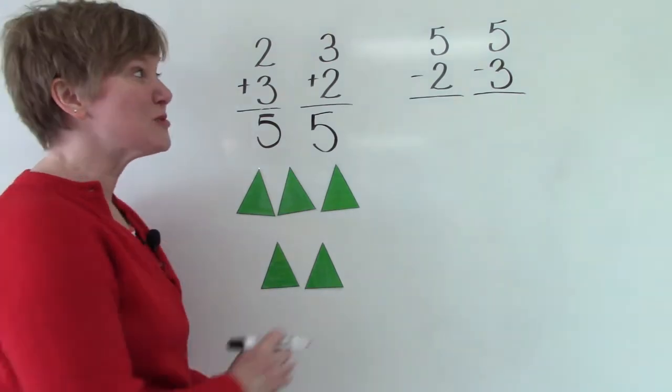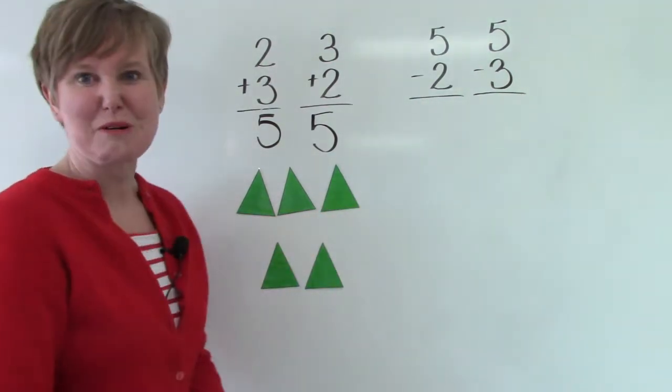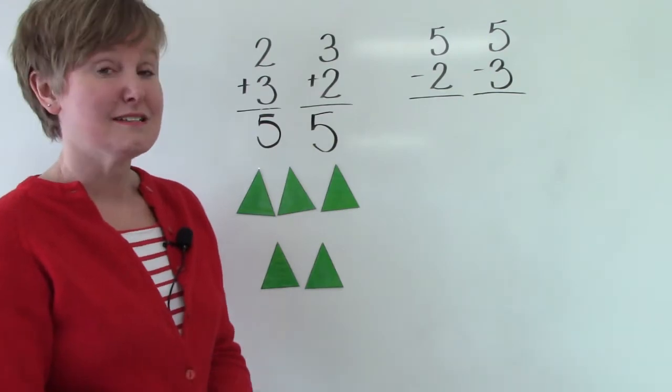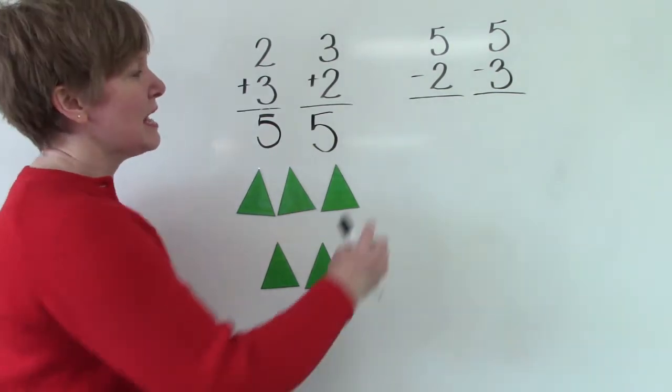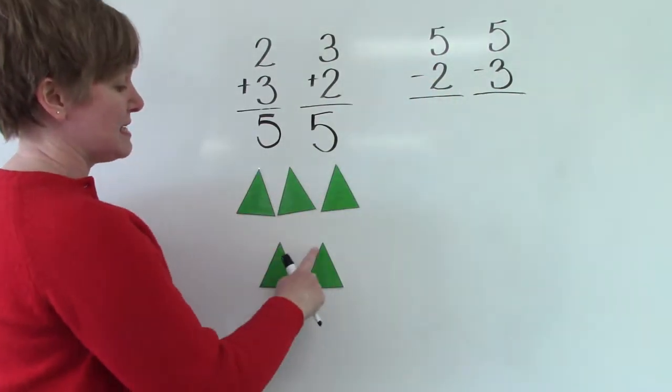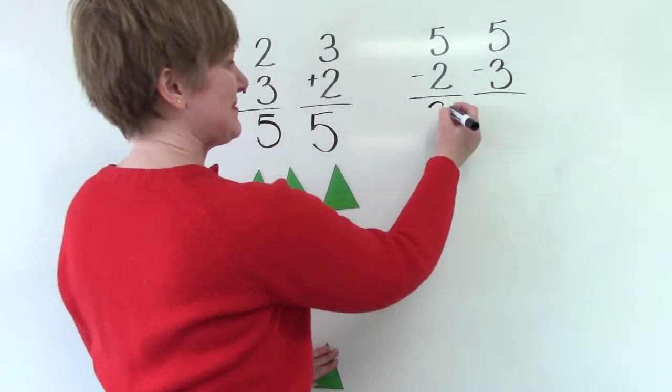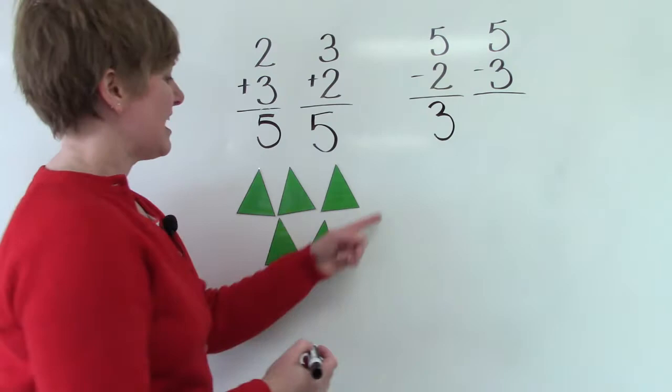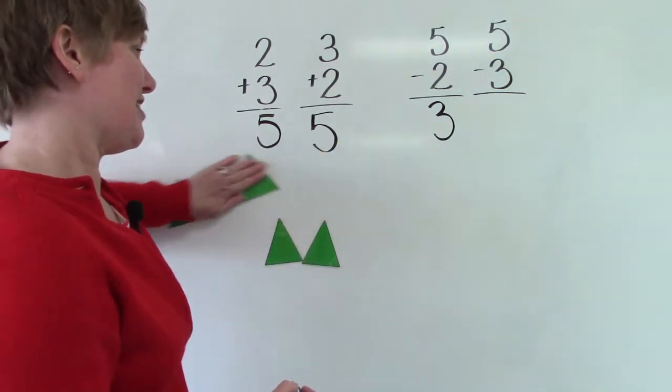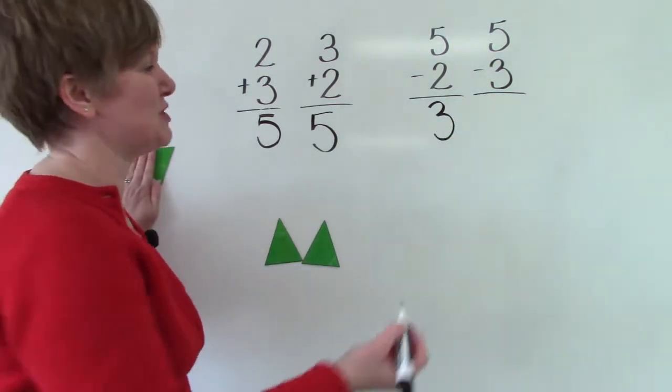We should be able to figure out our double plus 1 subtraction facts as well. If we have 5 and we take 2 away, our answer is 3. If we have 5 but we take 3 away, we have 2.